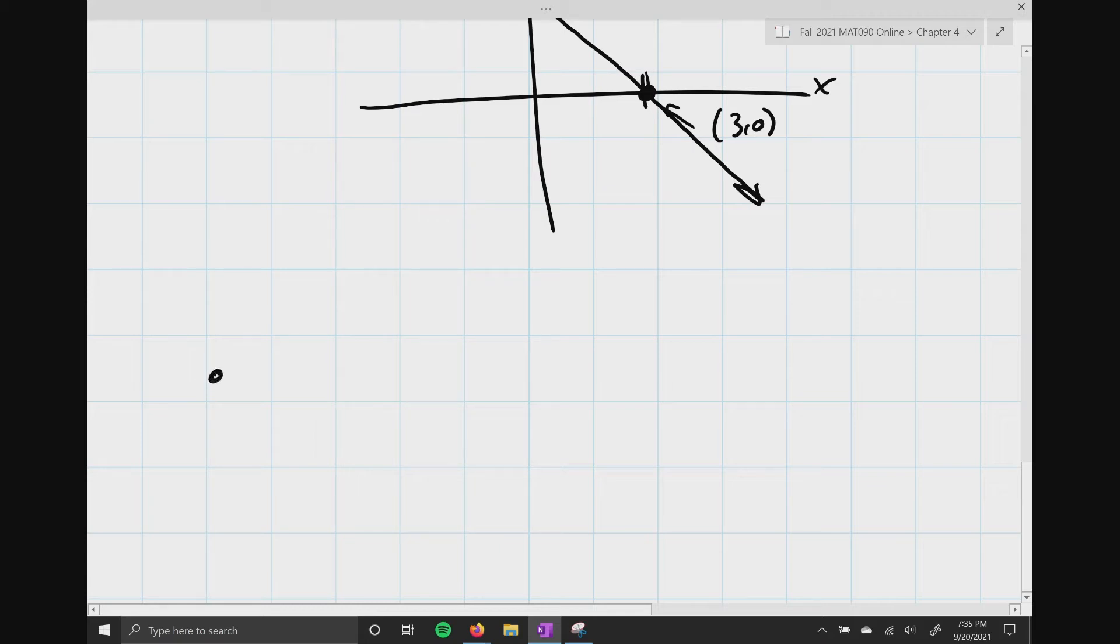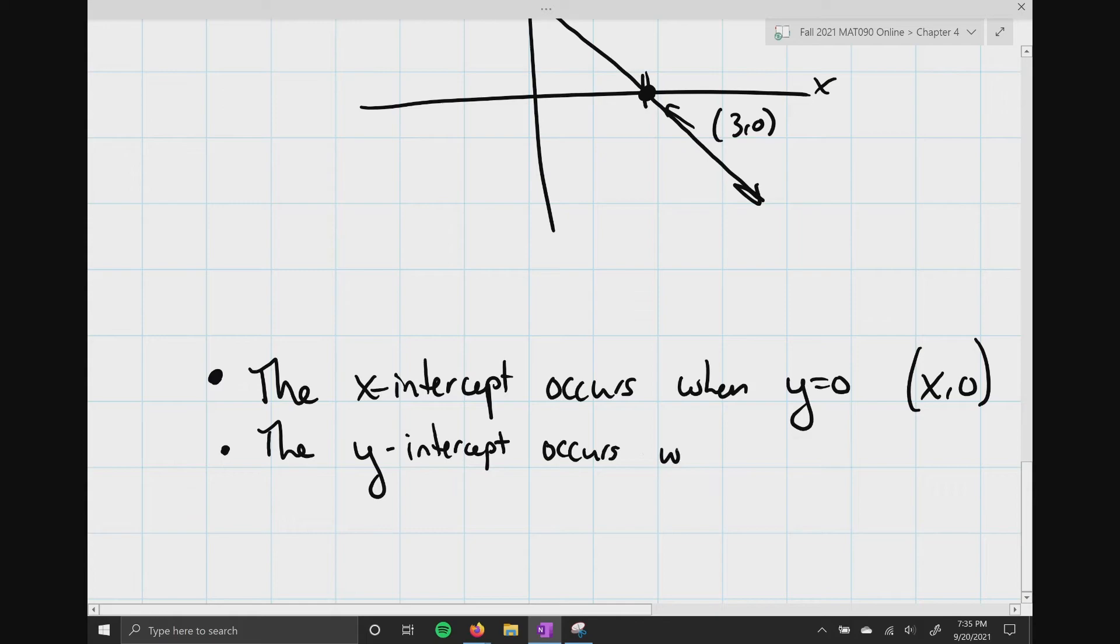So I guess maybe we'll put a little dot, that the x-intercept occurs when y equals 0, and you're always going to have this point right here, x comma 0. Likewise, the y-intercept occurs when x equals 0. And it's always going to have that feel of 0 comma y.